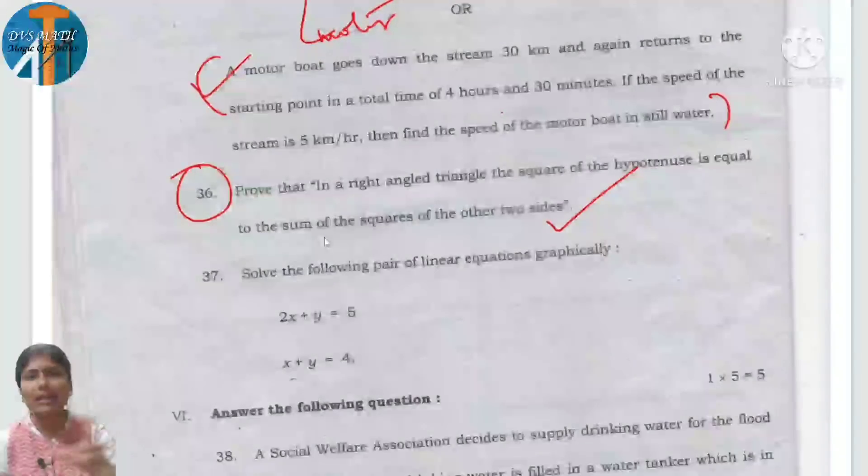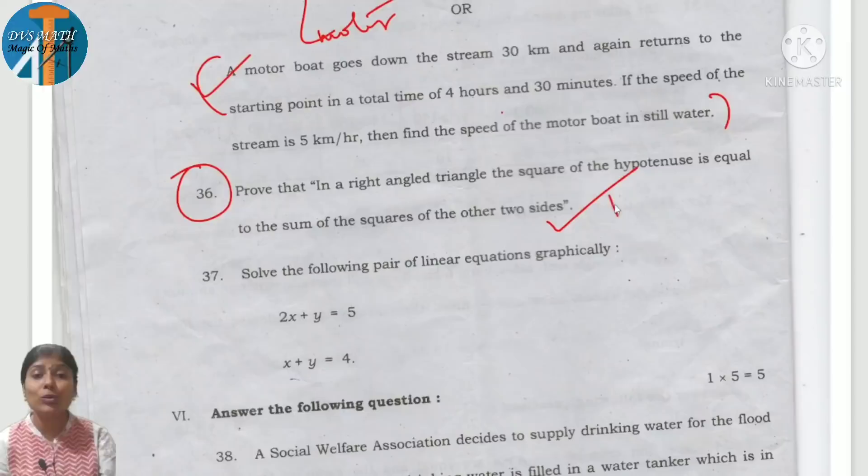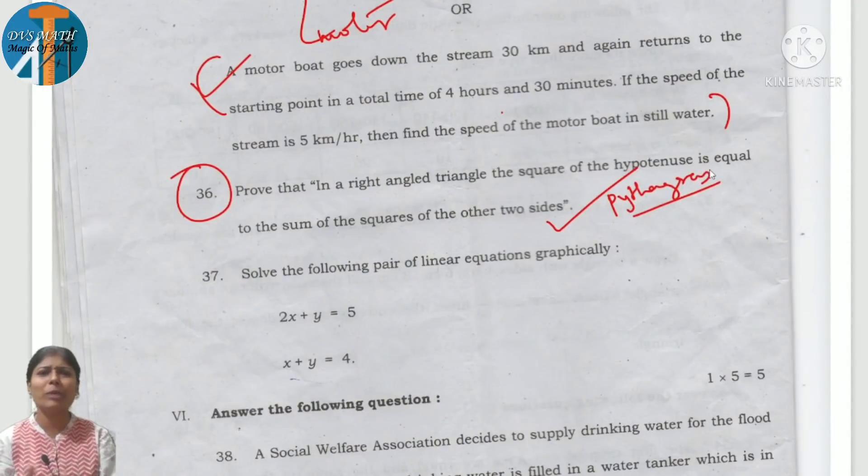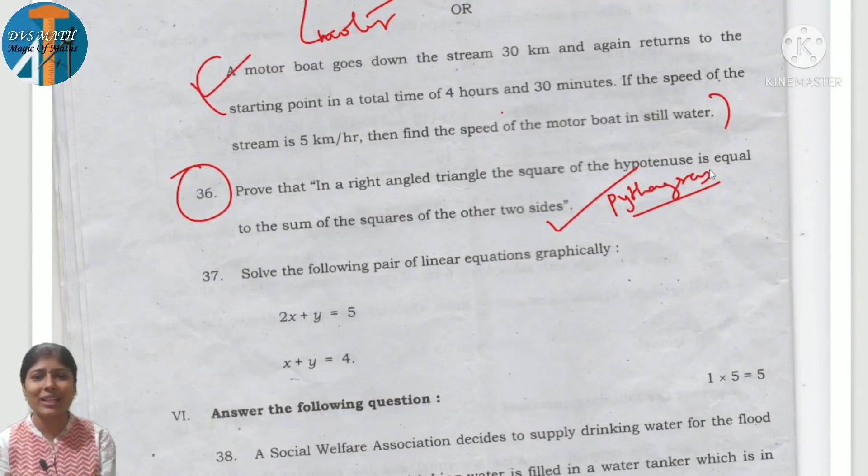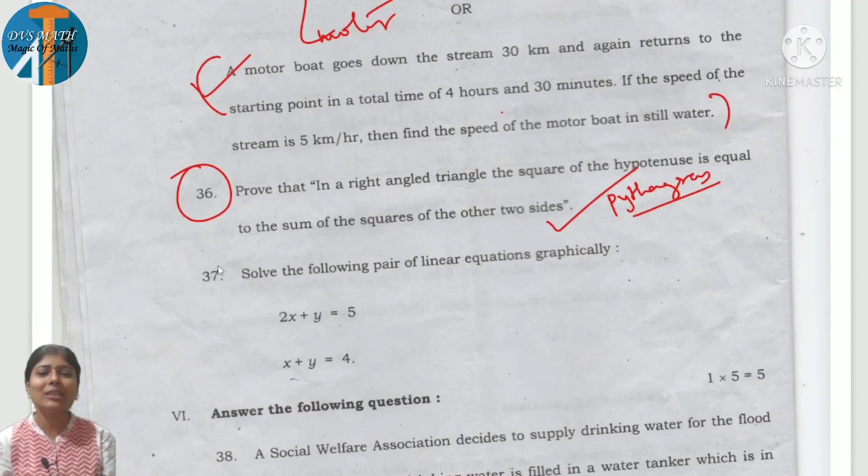Statement is given. 4 marks for theorem. Pythagoras theorem is here. So this time you got BPT and Pythagoras, it is very lucky. I am happy. But please recall the area one, don't leave it. Because people ask me, will you give area or will you give this?